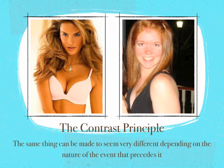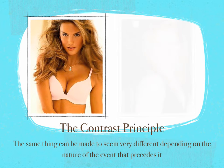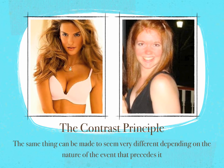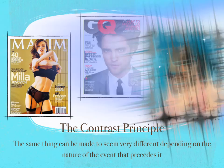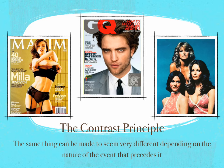Another weapon of influence, as Cialdini calls them, is the contrast principle. It states that the same thing can be made to seem very different depending on the nature of the event that precedes it. If we lift a light object first and then a heavy object, we estimate the second to be heavier than if we had lifted it alone. If we are talking to a beautiful woman at a party and are then joined by an unattractive one, the second woman will seem less attractive than she actually is. College students rated average-looking people as less attractive after looking through popular magazine ads or watching Charlie's Angels.